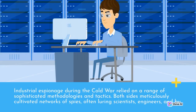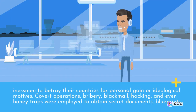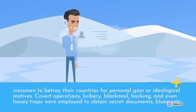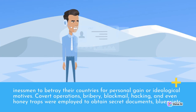Industrial espionage during the Cold War relied on sophisticated methodologies and tactics. Both sides meticulously cultivated networks of spies, often luring scientists, engineers, and businessmen to betray their countries for personal gain or ideological motives. Covert operations, bribery, blackmail, hacking, and even honey traps were employed to obtain secret documents, blueprints, and trade secrets.